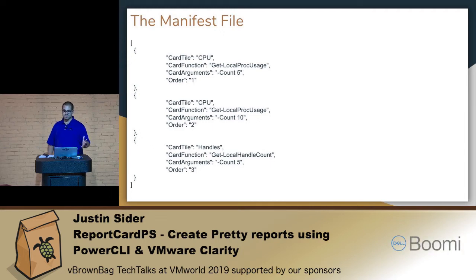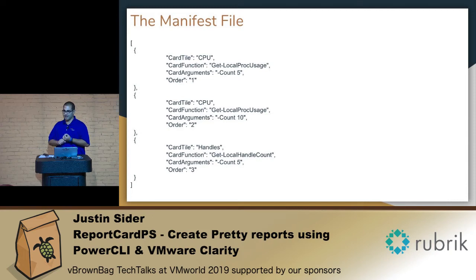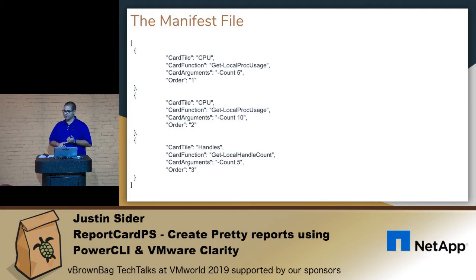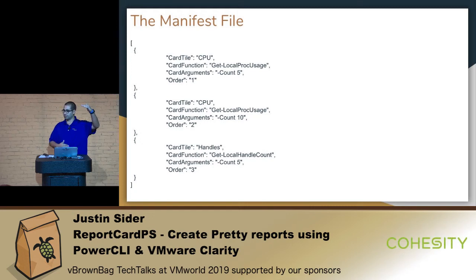So here's an example of a manifest file. It's pretty simple JSON. You have a card title and a card function. One thing you're going to want to know is that that function needs to be present in that PowerShell console or session that you have. You are going to have to write functions, but functions are not that difficult — you can really just put a one-liner in a function and everybody's happy. You can also pass arguments; just know that these are going in as a string, so encapsulate them correctly. Watch out for spaces — they're really not nice. And then you also have the option to do an order. By default if you don't provide an order, it's going to go first in, first out. Otherwise, if you have a long list of cards, you can actually order them as you wish.